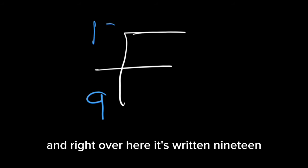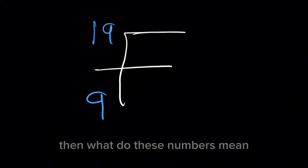For instance, you have this element F. And right over here down, it's written 9. And right over here, it's written 19. What do these numbers mean?